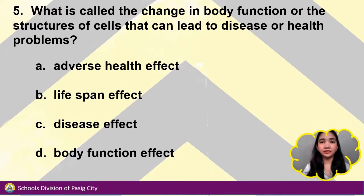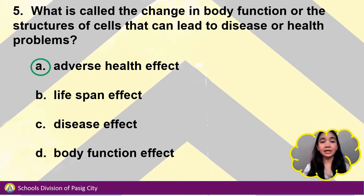Number 5. What is called the change in body function or the structures of cells that can lead to disease or health problems? A. Adverse health effect, B. Lifespan effect, C. Disease effect, or D. Body function effect. Answer: Letter A — adverse health effect.